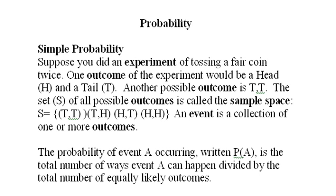Probability Part 1: Simple Probability. Suppose you did an experiment of tossing a fair coin twice. One outcome of this experiment could be a head on the first toss and a tail on the second toss. Another possible outcome is a tail on the first toss, a tail on the second toss.